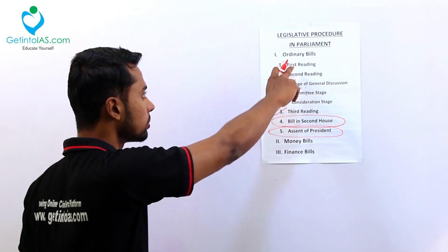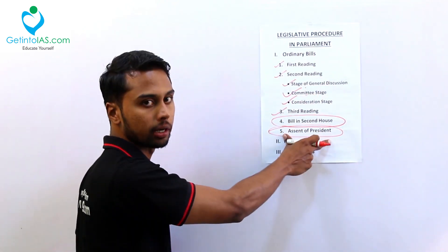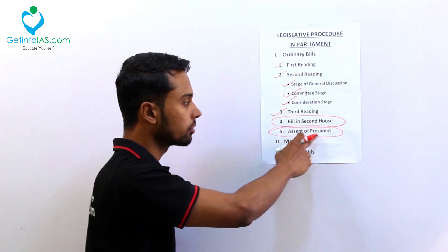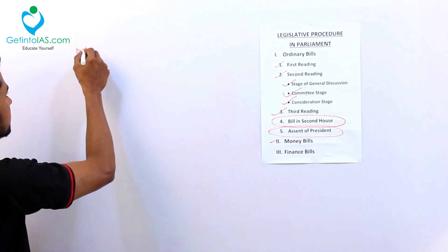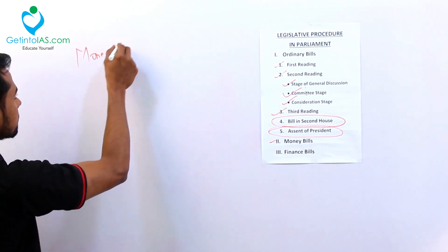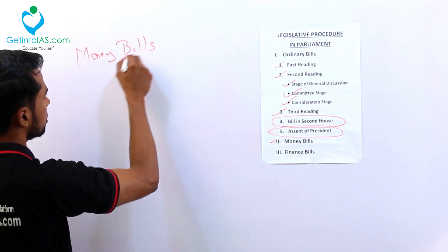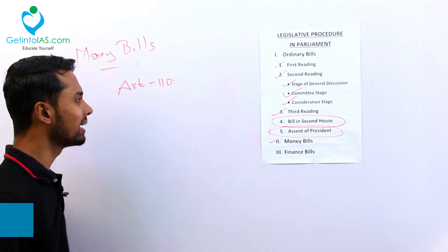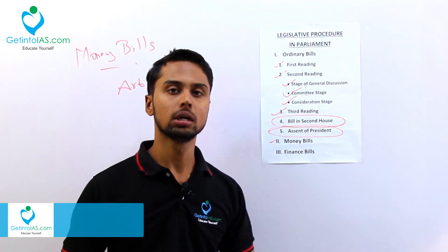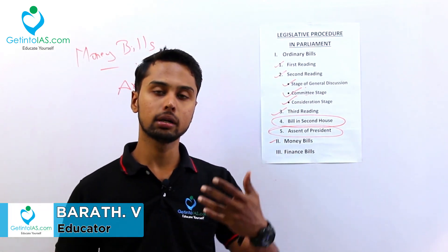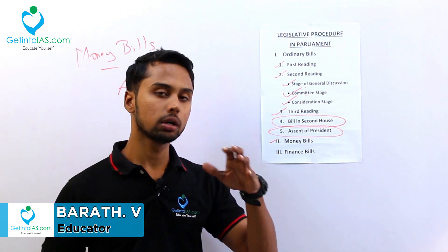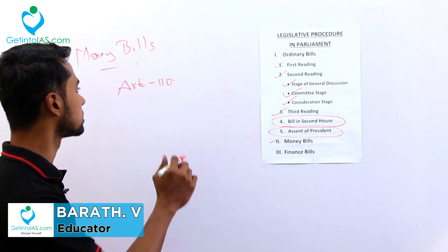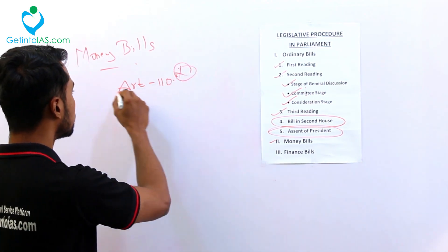Next we are going to see about the money bills. We have discussed about the ordinary bills and their stages in enactment. The ordinary bills start from introduction and end with the assent of the president. Now with the money bills - money bills are somewhat special. The article covered for money bill is Article 110.